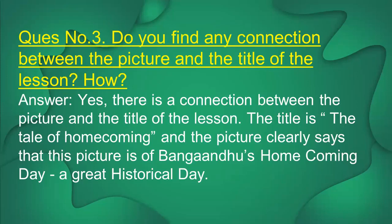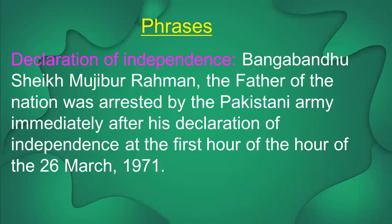I think you have already finished reading the text. Now go through Part C. Here are some phrases — you have to make sentences with these phrases. First one: 'declaration of independence.' Bangabandhu Sheikh Mujibur Rahman, the Father of the Nation, was arrested by the Pakistani army immediately after his declaration of independence at the first hour of 26 March 1971.